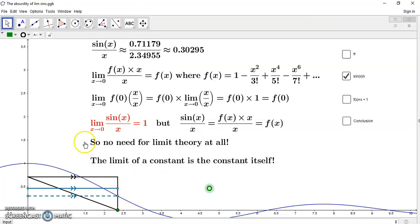It's actually completely irrelevant because there is a constant here. So now let's see, where is this constant? Well, if you look at this function here, f of x is equal to 1 minus x squared over 3 factorial plus x to the 4 over 5 factorial, etc.